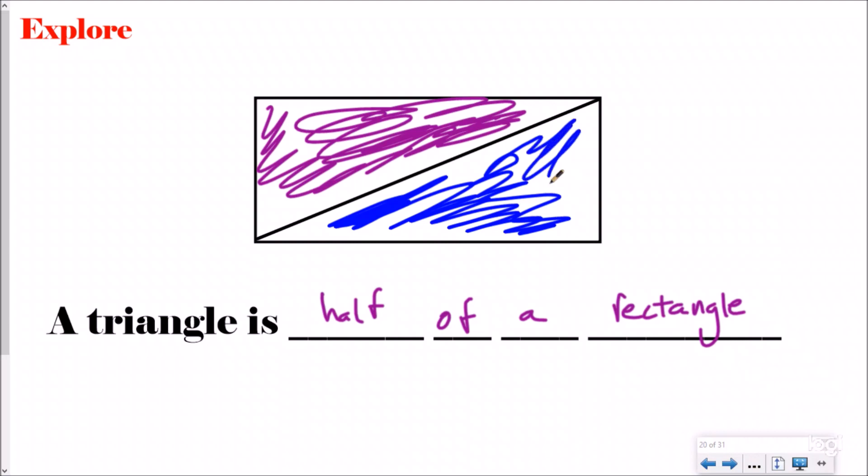Now for this instance, and really if you're ever breaking a rectangle, it's always going to be a right triangle because it's going to have a right angle in it. But our first thought that we need to know is a triangle is half of a rectangle.